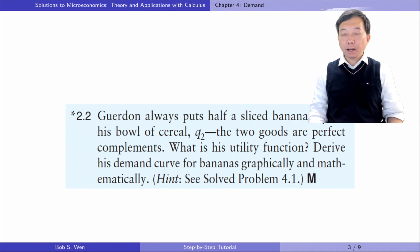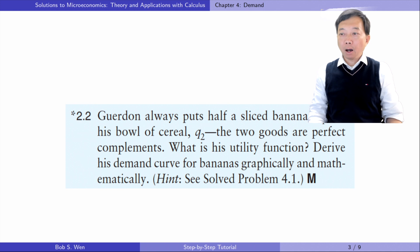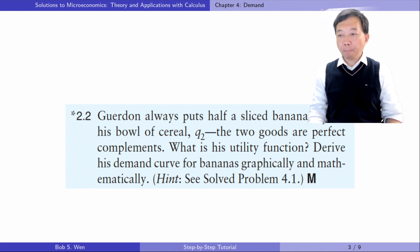Let's do exercise 2.2. The consumer always puts half of a sliced banana Q1 on his bowl of cereal Q2. The two goods are perfect complements. What is his utility function? Derive his demand curve for bananas graphically and mathematically.